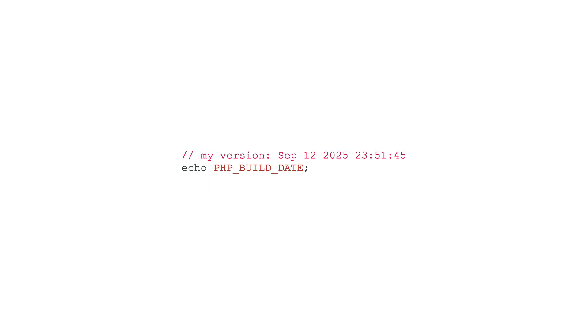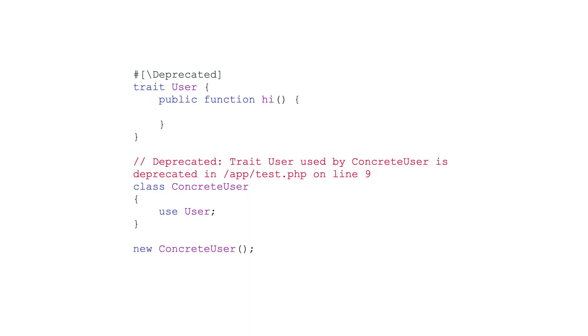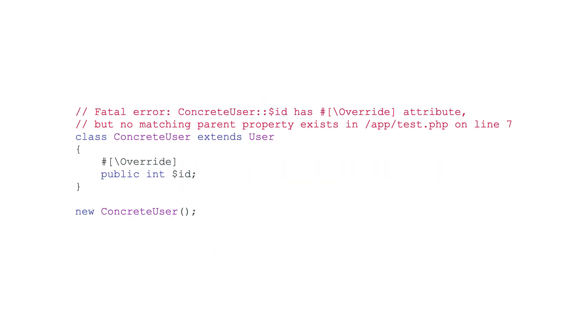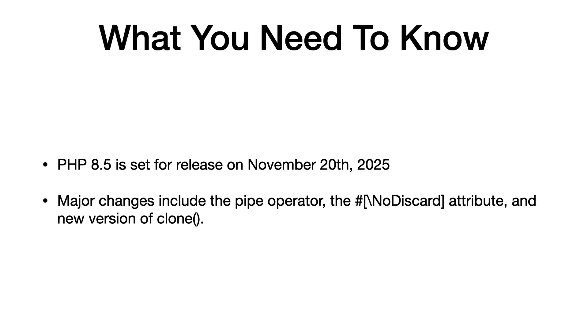There are too many features to go over in depth in one video, so here's a lightning round. There's a new PHP_BUILD_DATE constant that tells us when the current PHP build was compiled. We can now add the Deprecated attribute to traits, and we can add the Override attribute to properties. Finally, the OPcache extension is no longer going to be optional and will be statically compiled into PHP — a huge win as it'll always be available. There are also some deprecations that might be removed in PHP 9; notably, people will likely be annoyed that they can no longer use backticks to run console commands.